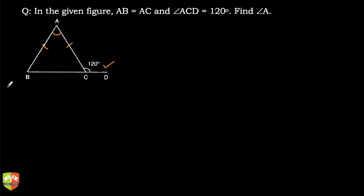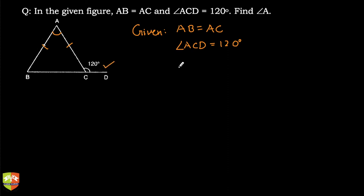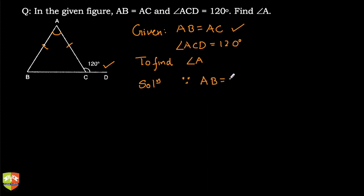You have to find out angle A. What is given? AB is equal to AC, and angle ACD is equal to 120 degrees. What to find? You have to find angle A. Since AB is equal to AC, therefore angle ABC is going to be equal to angle ACB, because angles opposite to equal sides are going to be equal. Let us say angle ABC is X, so angle ACB is also X.